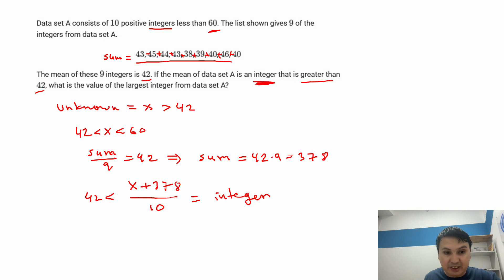But since x is bigger, the next candidate would be 52. The next candidate would be 62 and so on and so forth. But it cannot be more than 60. So we cannot allow 62, which means my x must be 52.